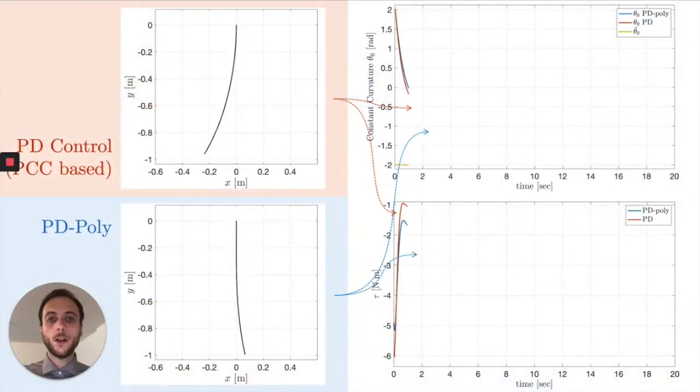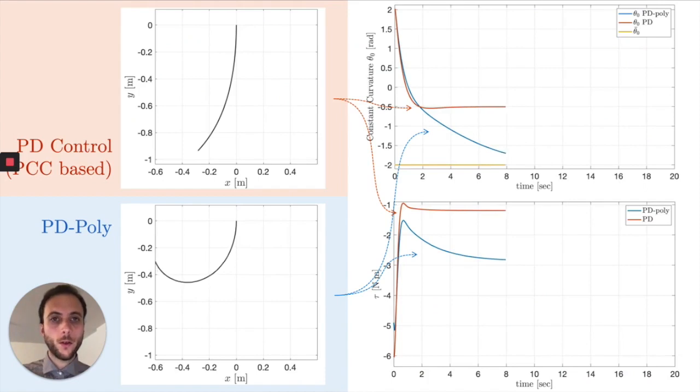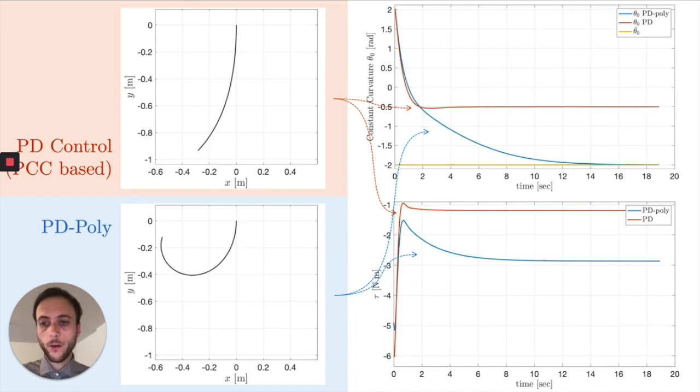Instead of focusing on the whole configuration of space evolution, it's probably more interesting to look at what's going on in terms of the constant curvature term, which is what we actually want to regulate. Regulating the constant curvature term with the knowledge of only the constant curvature term produces a steady state behavior which has an error which is around 50%. So instead of going to steady state at the desired minus two, it goes to minus 0.5.